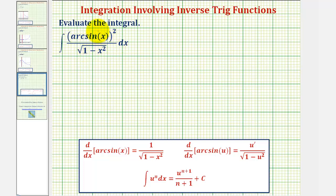This looks rather messy, but if we recognize that the derivative of arc sine x is equal to one divided by the square root of the quantity one minus x squared, this works out very nicely with u substitution.